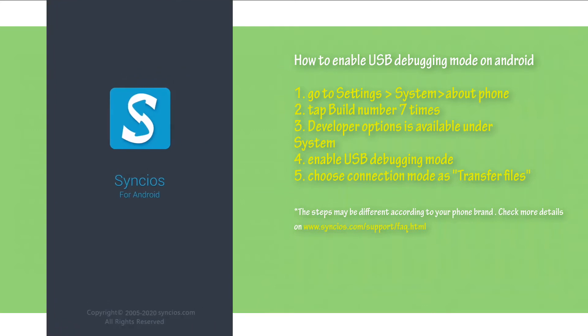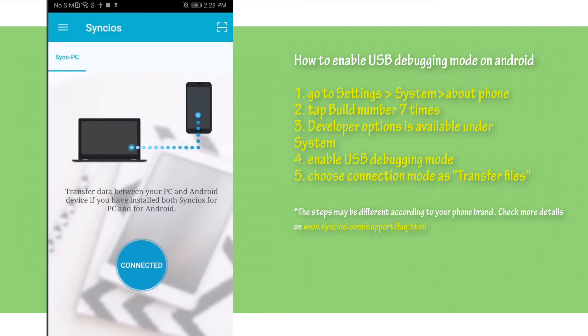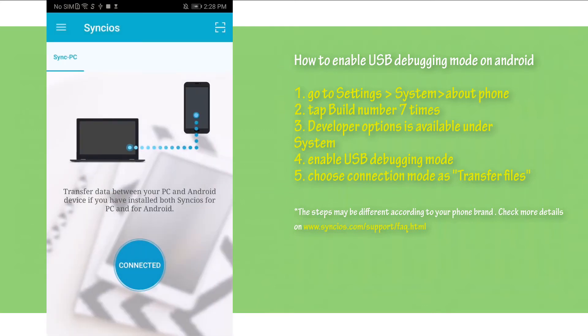Now you will see 'Connected' on the phone app, which means your Android phone is successfully connected.